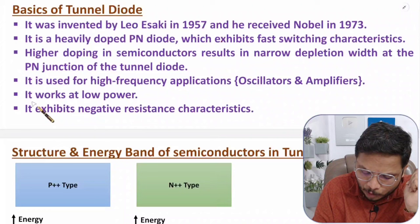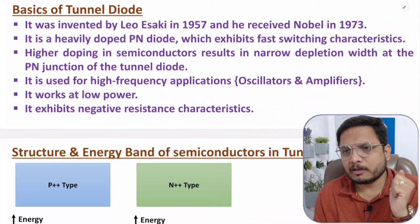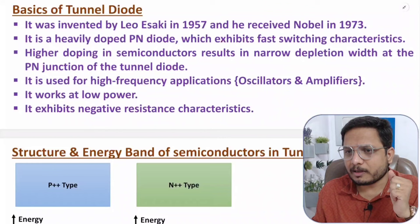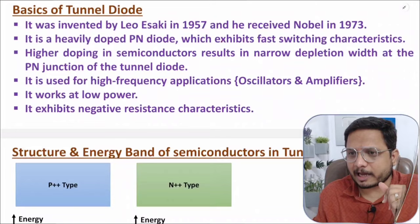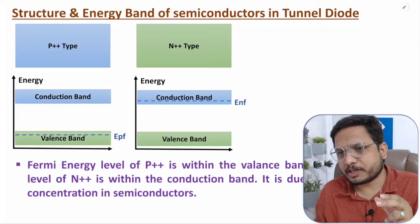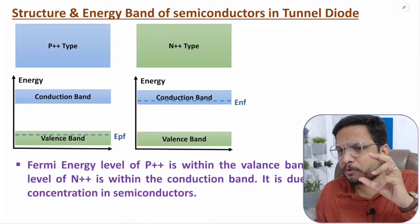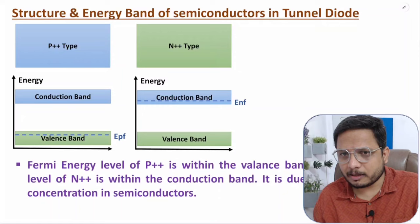Tunnel diode operates at low power and it also exhibits negative resistance characteristics. All these points I am going to explain in great detail in this video. Now let us move on to the structure and energy band of semiconductors in tunnel diode, where we use higher doping concentration with N type and P type material.